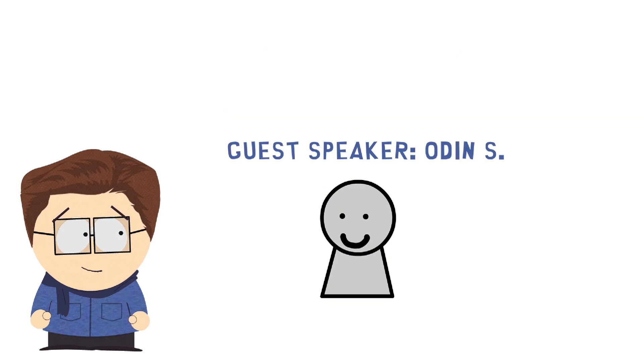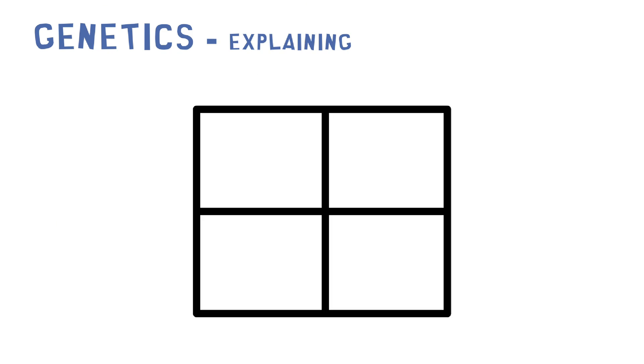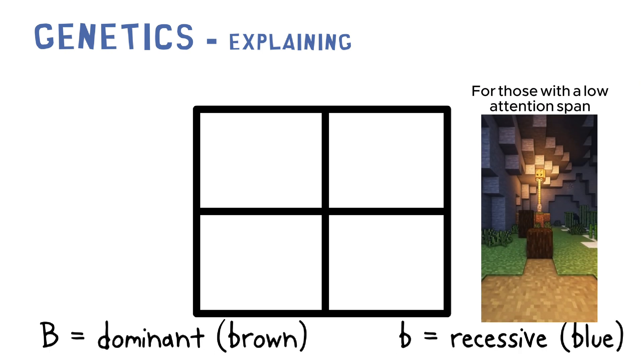To predict what traits a child might inherit, scientists use Punnett squares. This is what a Punnett square looks like. Isn't it cool? Now here's an example. Let's say that brown eyes are dominant and blue eyes are recessive.